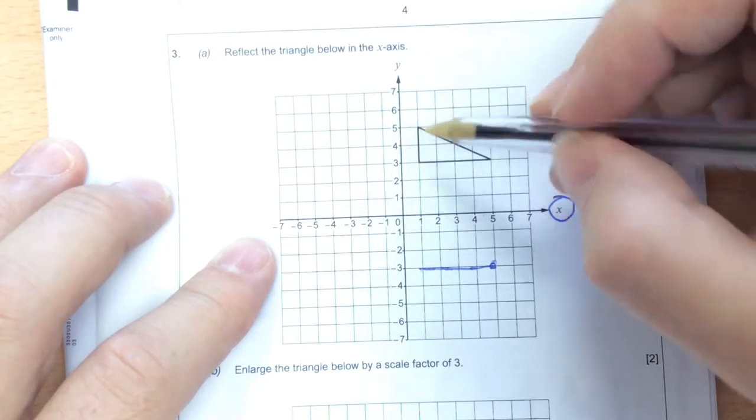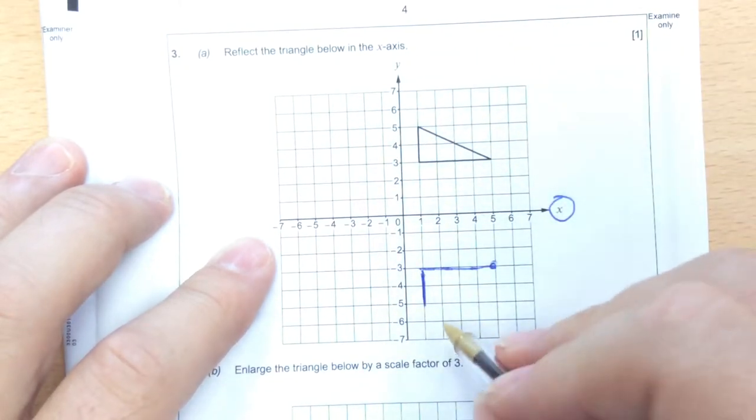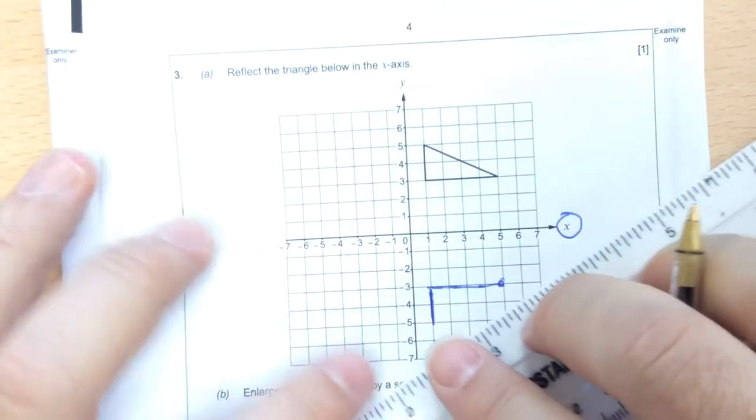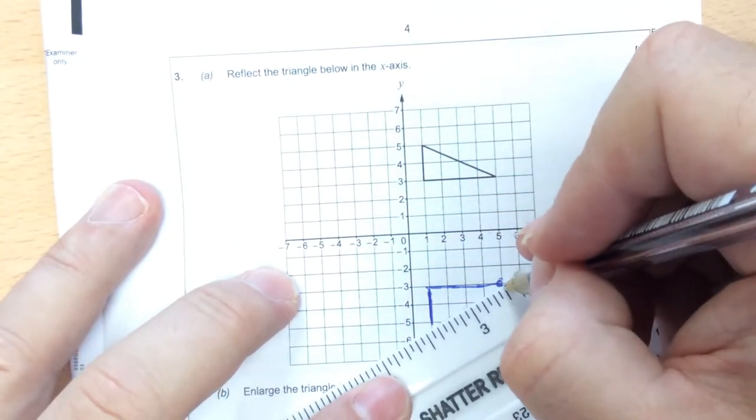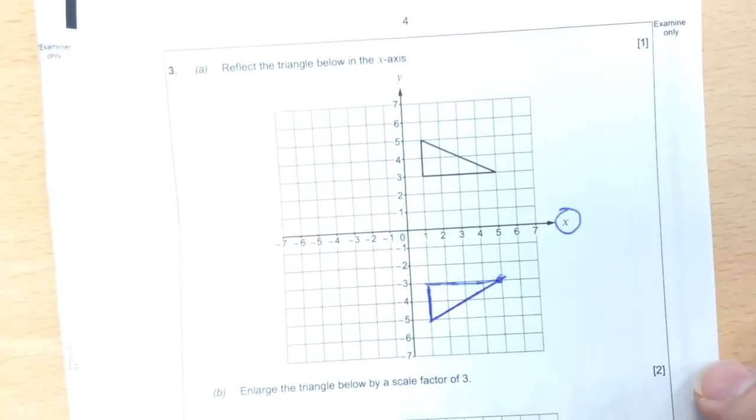And then instead of going up 2 at this point, you go down 2 and that would make that shape. And then your final point would be join up the 2 corner points. So the 2 corner points I'm joining up and that makes the mirror image.